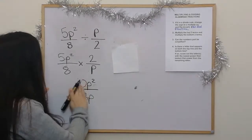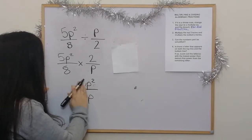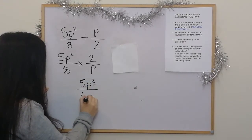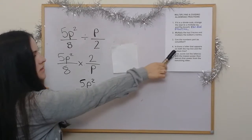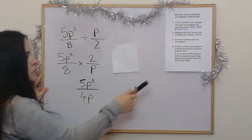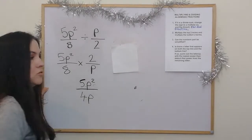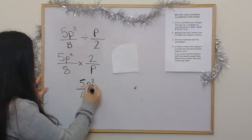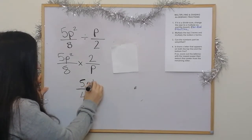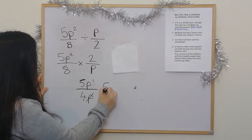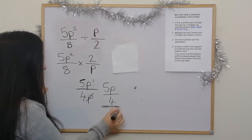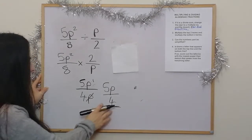Then: can the numbers part be simplified? 10 and 8 can both divide by 2, so the top becomes 5 and the bottom becomes 4. Is there a letter on both the top and bottom lines? We've got P squared and P, so we lose the P and subtract 1 from the power. The final answer is 5P over 4.